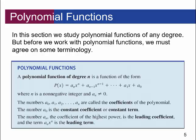a sub 0, this last one, is the constant coefficient or constant term — it has no x part, it's just the constant at the end. What's really important is a sub n, the coefficient of the highest power. This is called the leading coefficient, and that's going to be important for describing the behavior of a graph. The term a sub n times x to the n is called the leading term, which is really important for helping us sketch the graph.